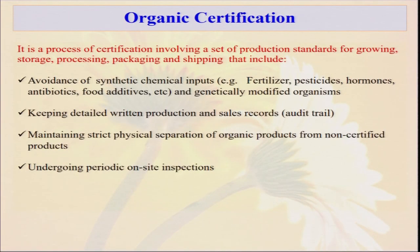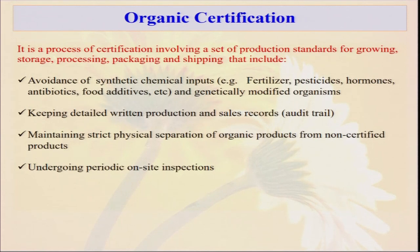Organic certification is a process involving a set of production standards for growing, storage, processing, and packaging — including avoidance of synthetic chemical inputs. You cannot use any type of synthetic fertilizer, pesticide, hormone, or antibiotic. When going for certification and inspection, you must follow all the organic standard protocols. Keeping detailed written production and sales records is very much needed — you must document everything: where you are taking inputs, how much input you have given, what different types of produce are on your farm, where you are selling, and how much you have generated.